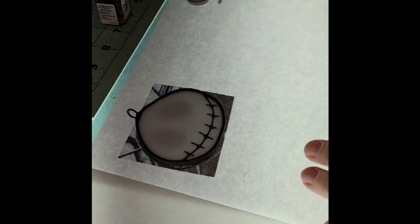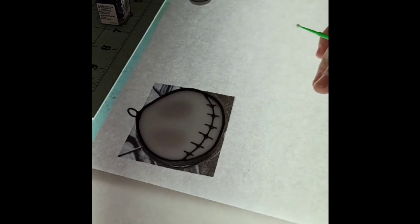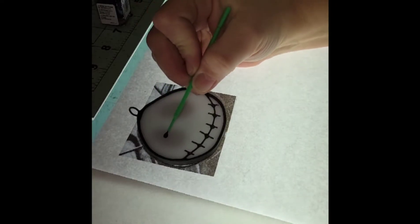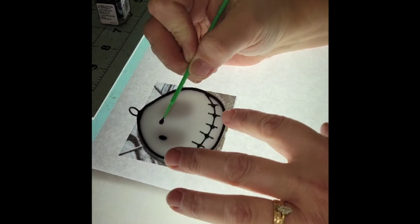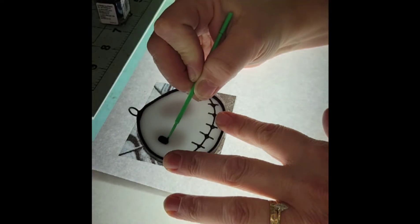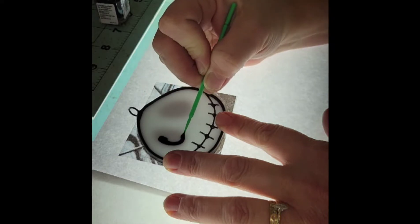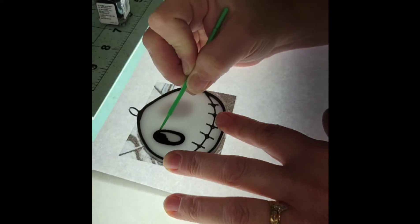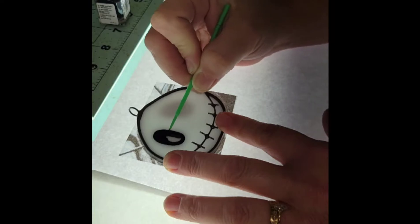These are just little micro brushes that I get at the craft store. The nice thing about the enamel paint is that if you make a mistake, it doesn't matter. You can come back and fix it. When it dries, you can scrape it off.